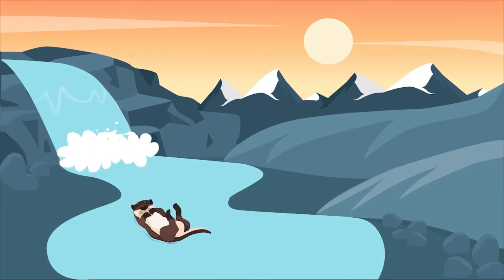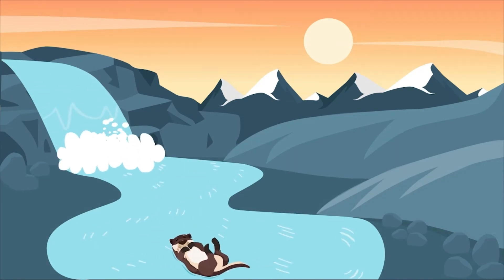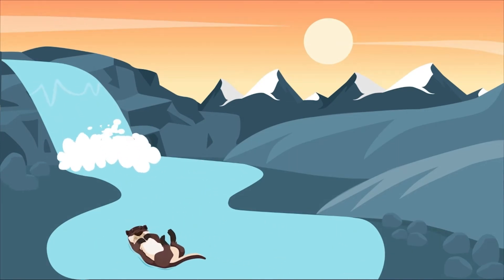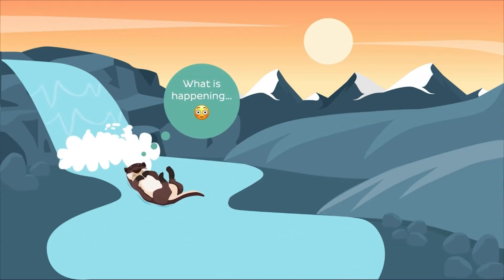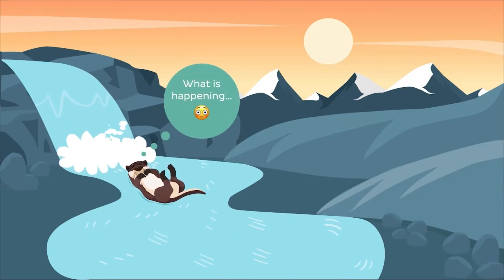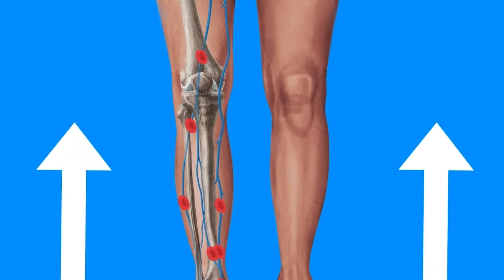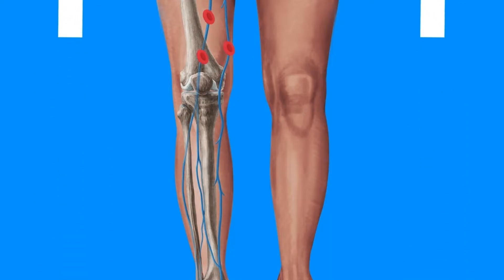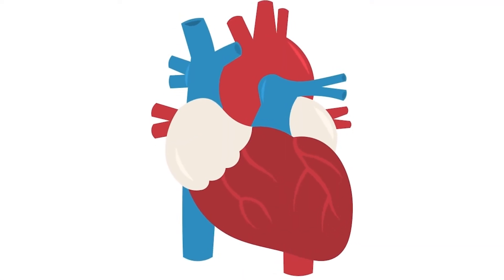Can you imagine a mountain river flowing backwards? Given the force of gravity, that's impossible, right? Then how do you explain how blood from the veins of our legs is constantly flowing against gravity all the way to the heart?